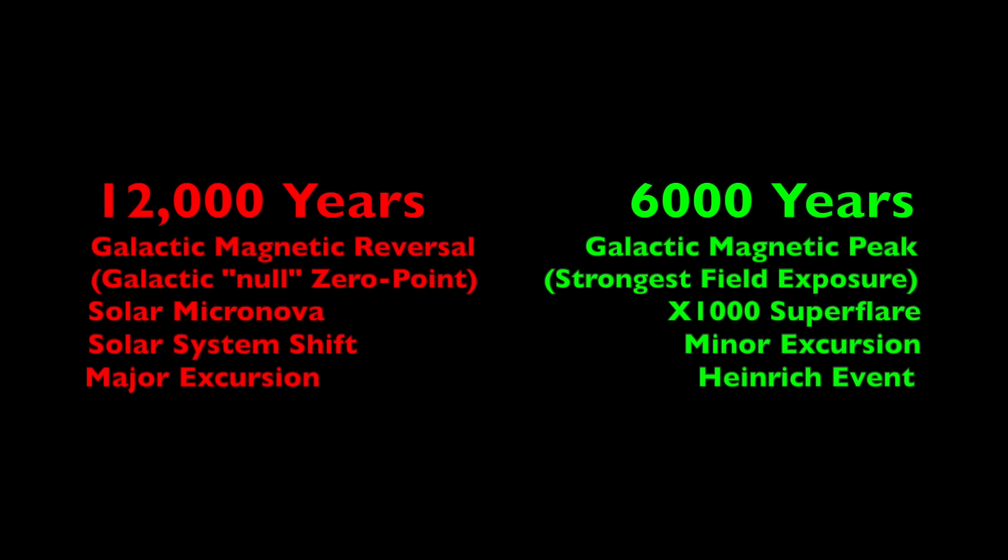The 6,000-year event is still pretty bad, just not quite as bad as the 12,000-year one. Peak galactic field exposure, X-1000 superflare, probably some solar system impacts too, but at least certainly the minor excursion in Earth's geologic record. And because the protons from the X-1000 superflare are following the cusp, they superheat the polar ice and cause a Heinrich event, which causes widespread floods and then chills the globe.